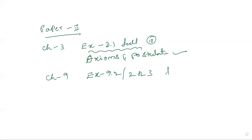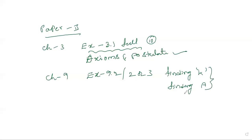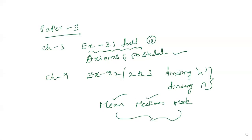Exercise 2.3 — finding k-value. Meaning, mean or missing frequency — find out. The example is finding A. These two are very practical. This means mean, median, or mode. This means 3.3 — you can find out. For some years, median is 4 marks, and for some years 3.3 percent.